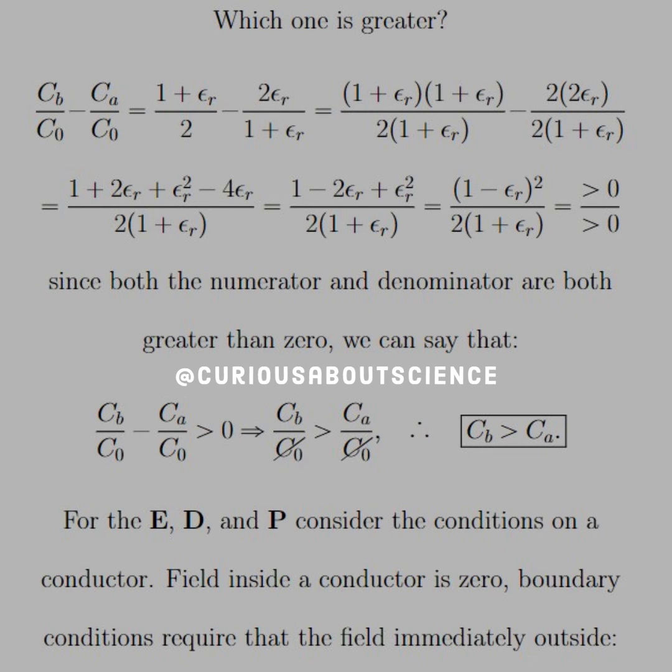So now we must determine which ratio is bigger. To do this, we take the difference between the configuration B ratio and the configuration A ratio. We see here their capacitance ratios as such, and we simply algebraically simplify down, finding a common denominator, and then foiling out. Then after that, we factor down to see that we have this fraction: 1 minus epsilon r squared divided by 2 times 1 plus epsilon r.